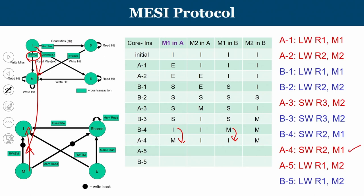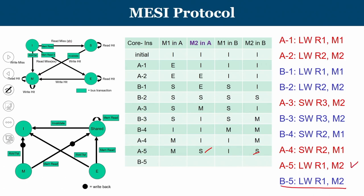A5 is a read operation on M2. M2 in A is in the I state. A read miss causes a transition from I toward S. B was holding M2 in the M state; seeing the read request, B's M2 is downgraded from M to S, and A's M2 moves to S as well. Both copies of M2 end up in the S state. B5 is also a read operation on M2, and the state is retained — both A and B are reading M2.